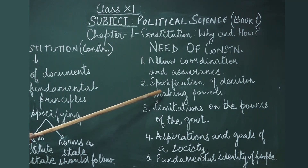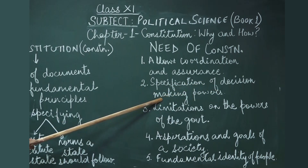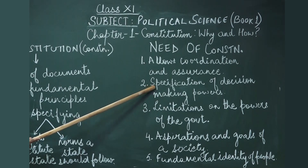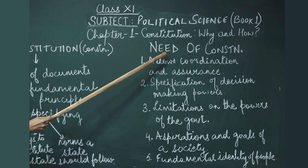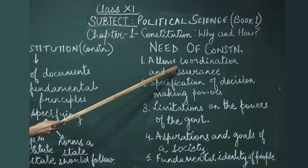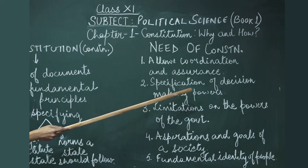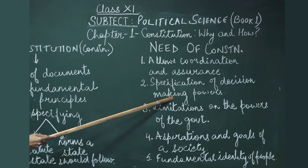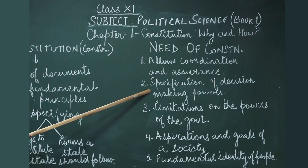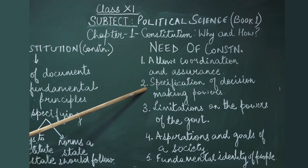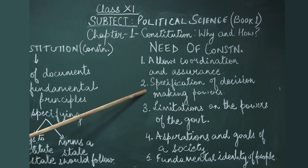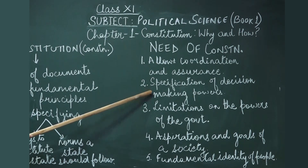The second point is specification of decision-making powers. The constitution was required for coordinating, but the major question was: who will make these decisions? There has to be somebody who creates the rules and principles. In a monarchy, a monarch does so; in a dictatorship, it is a dictator who makes the rules. Whoever is the head of the government makes the rules — like in a family the father makes the rules, and in school the principal makes the rules.